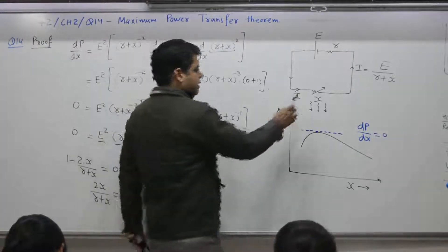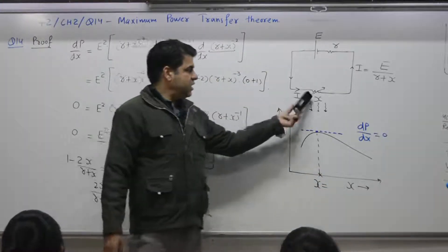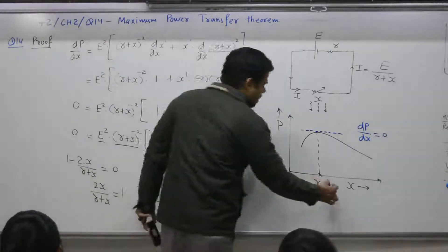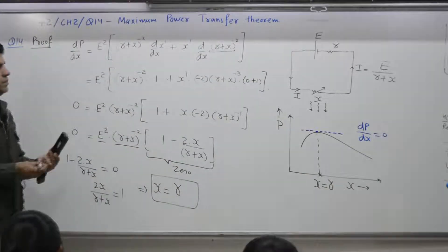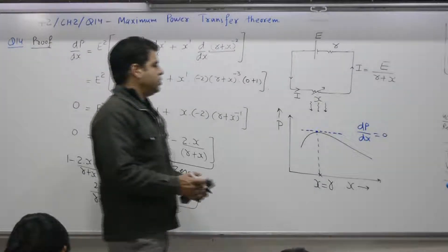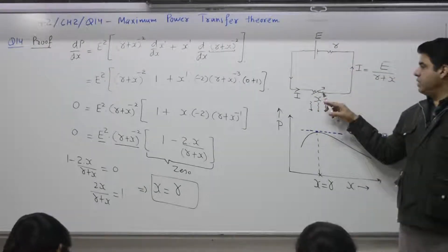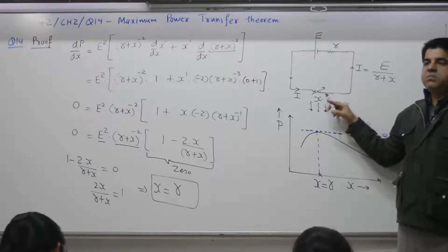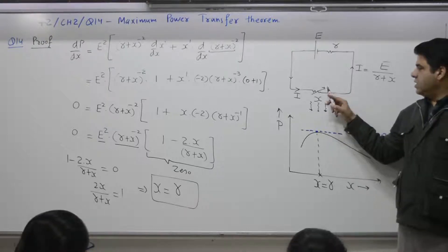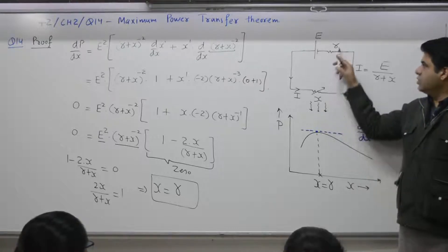So maximum power is transferred at the point where X is equal to R — the external resistance. As per the maximum power transfer theorem, the power transferred across the external load is maximum when the external resistance is equal to the internal resistance.